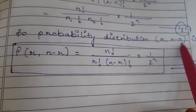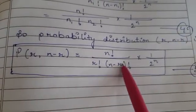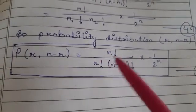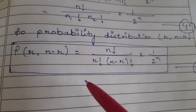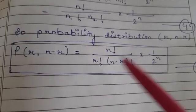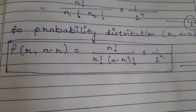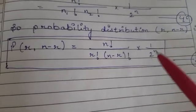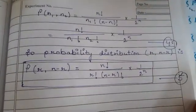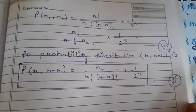We have described meaningful and meaningless arrangements and derived the distribution of N particles in two different compartments. Hope that is clear. Thank you.